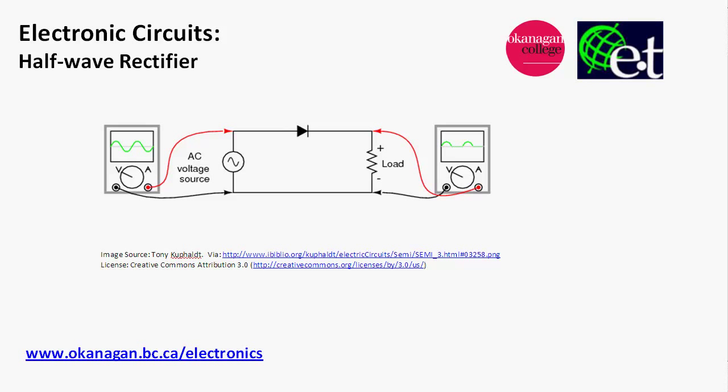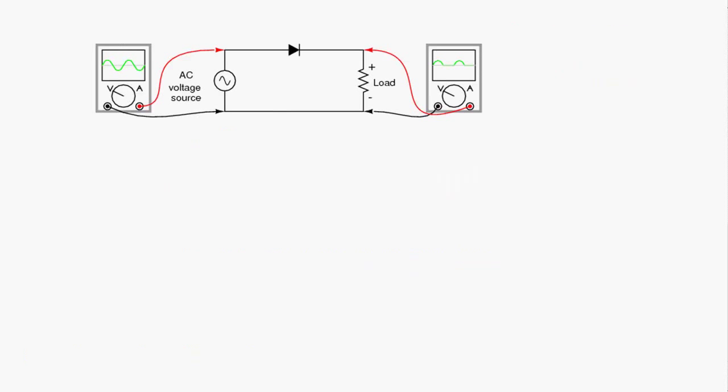Hello there. This is David Williams from the Electronic Engineering Technology Department at Okanagan College, and this short video is about half-wave rectifiers. A half-wave rectifier is a fairly simple circuit that takes an AC source and effectively turns it into a DC source.